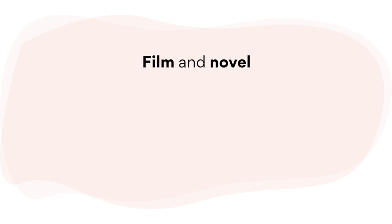Throughout this video, I'll use examples of text pairs that are currently on the Vika study design. Even if you're not familiar with these texts, don't worry — it's more about the way you can compare the two texts. You need to know what makes a film and novel unique to themselves: film techniques for a film and literary devices for a novel.